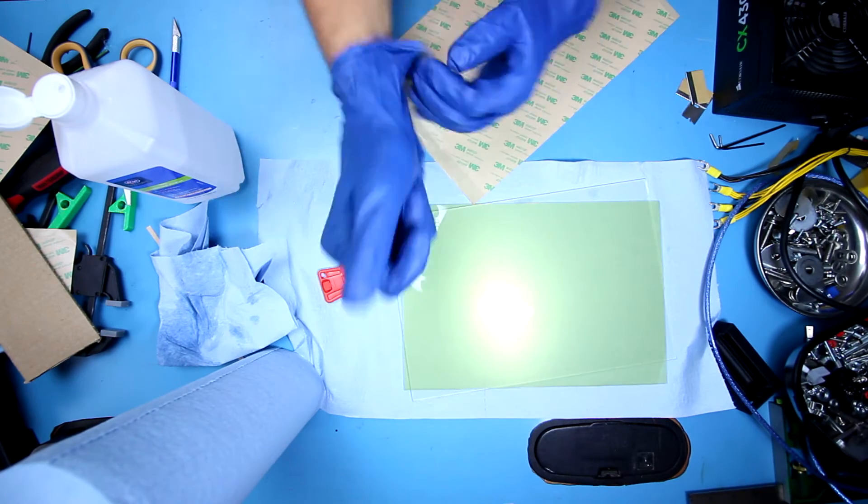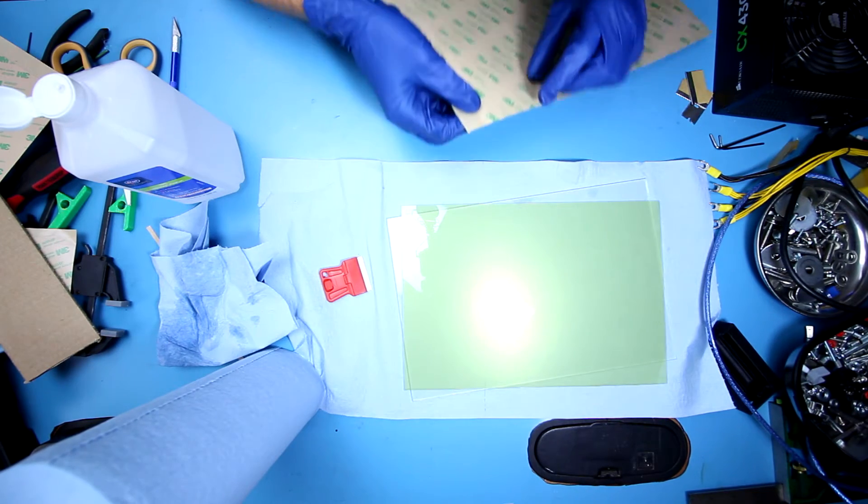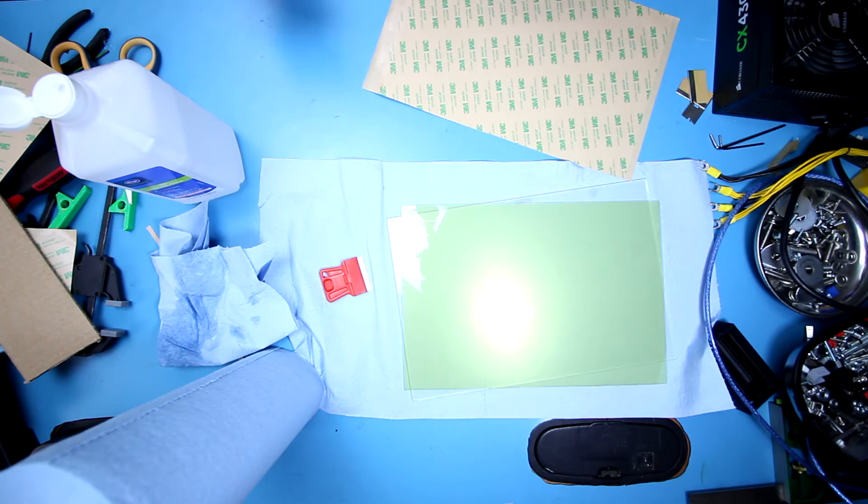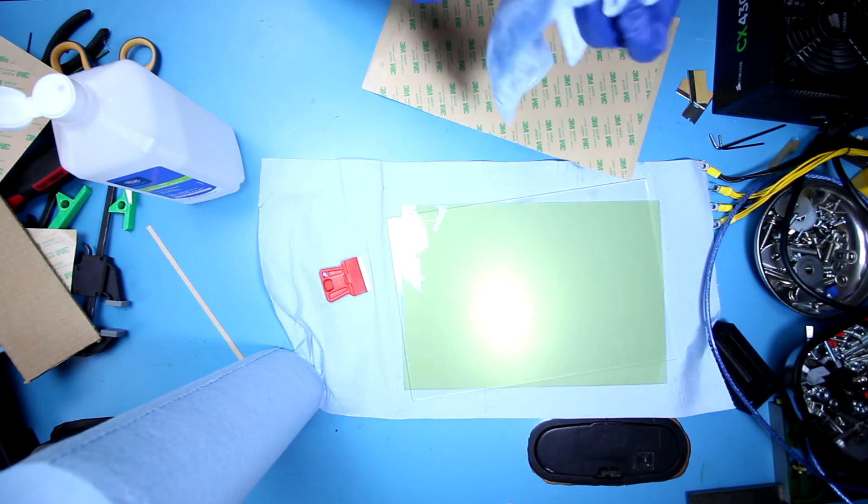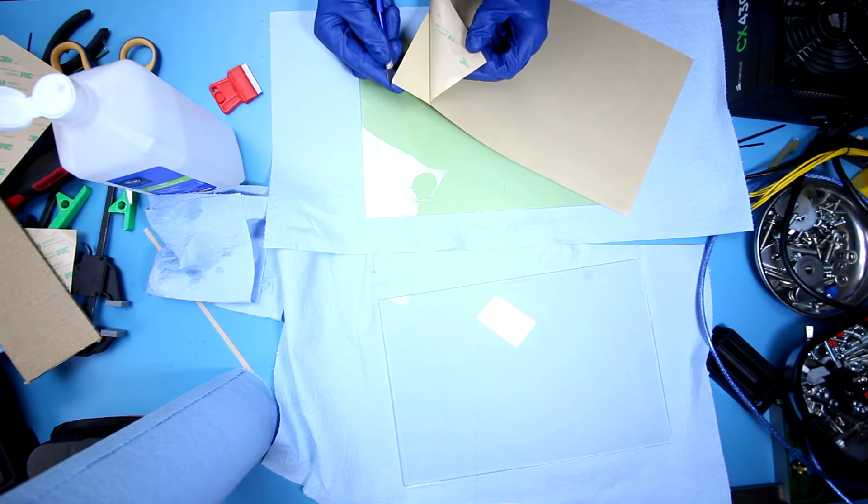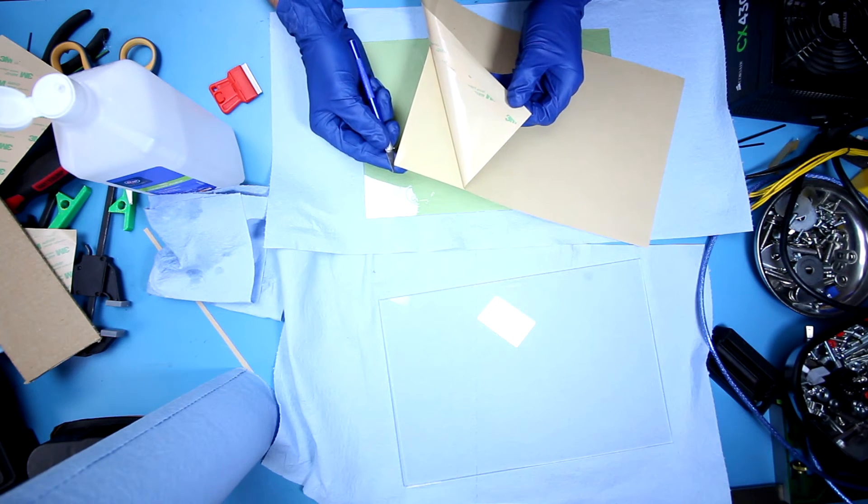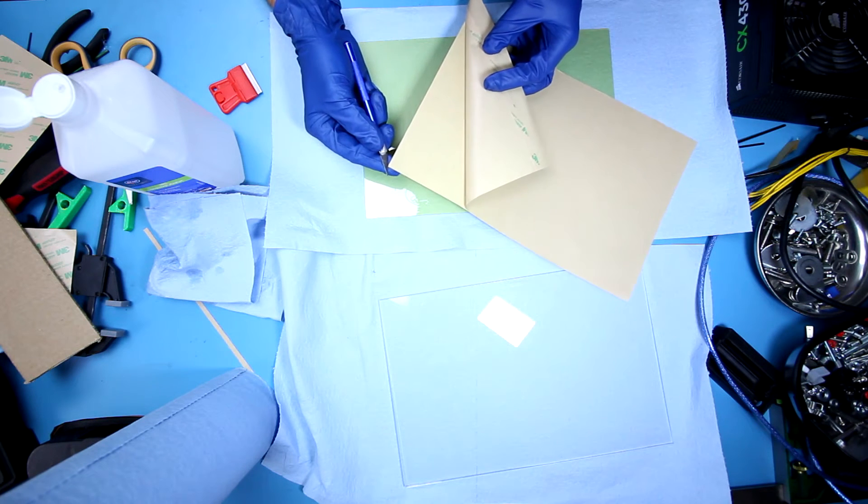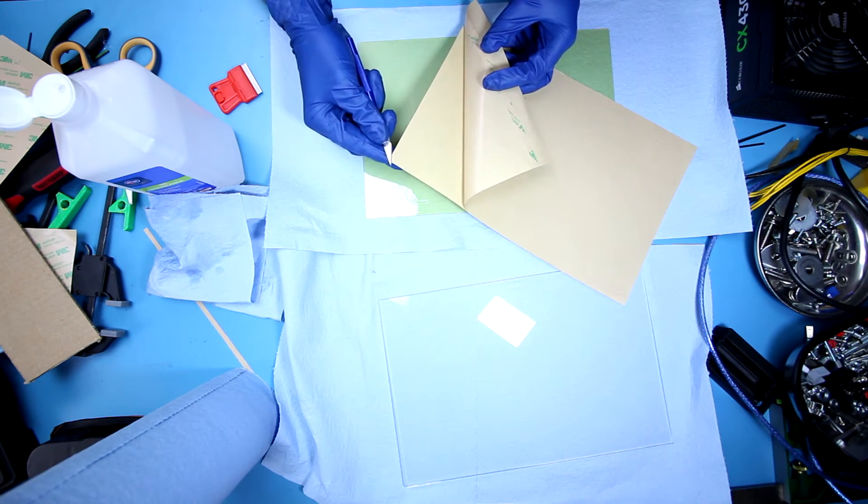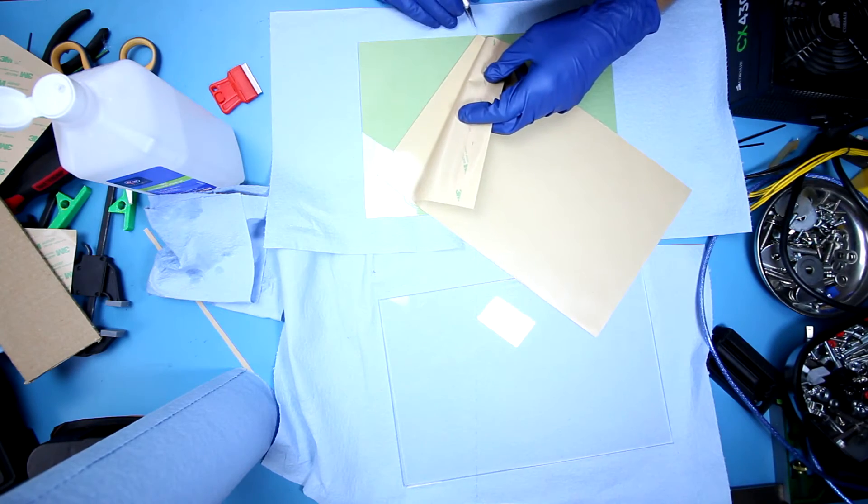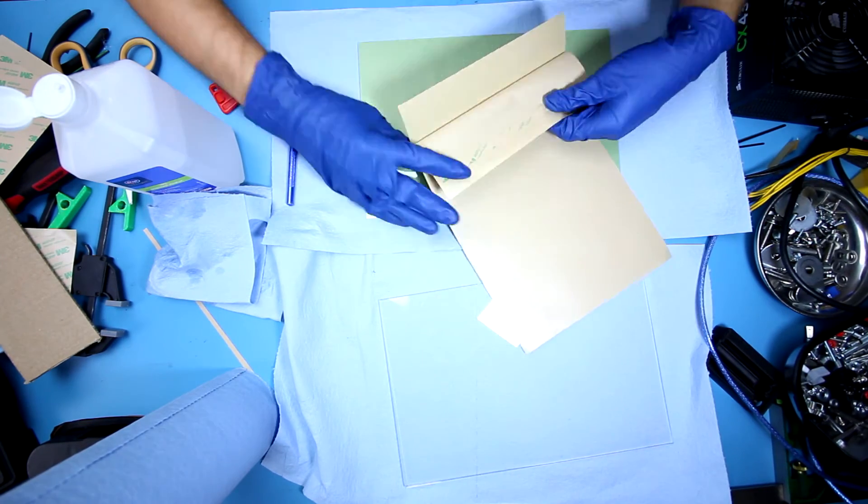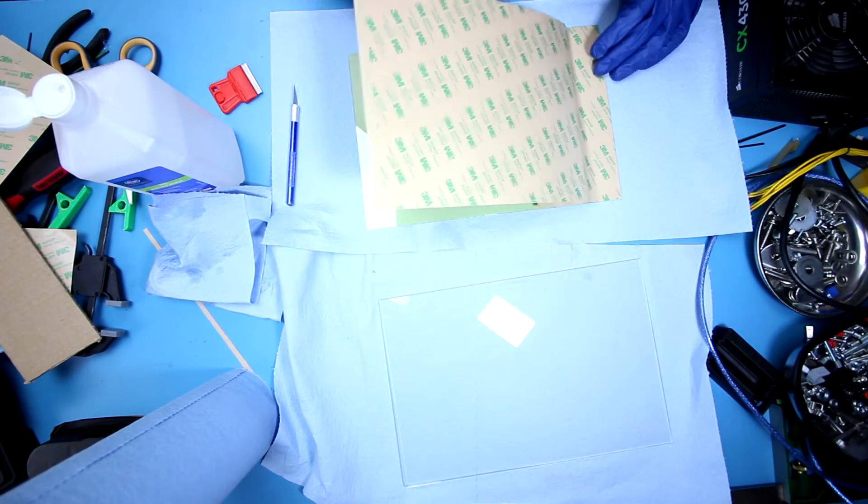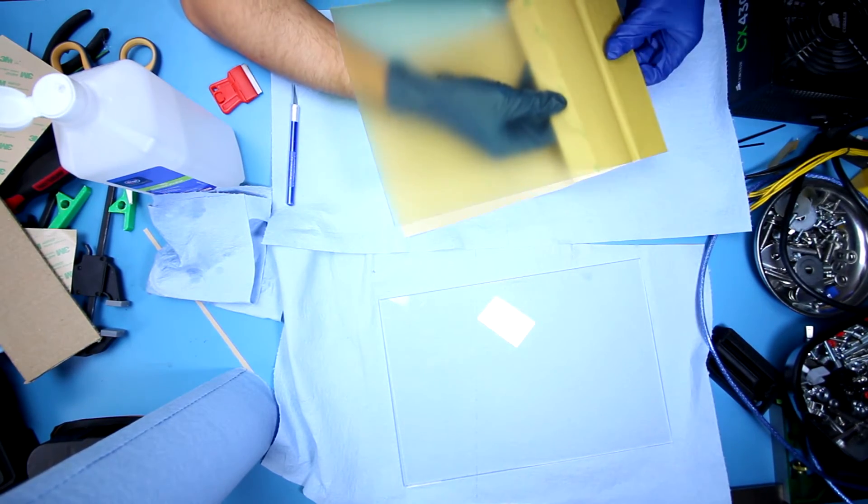Now what we want to do is get our 3M adhesive sheet and slowly but surely peel it off. I like to use the exacto knife. I'm going to clean that. Slowly but surely we're just going to peel it, and you'll just want to get your fingers as close to where you're actively peeling.